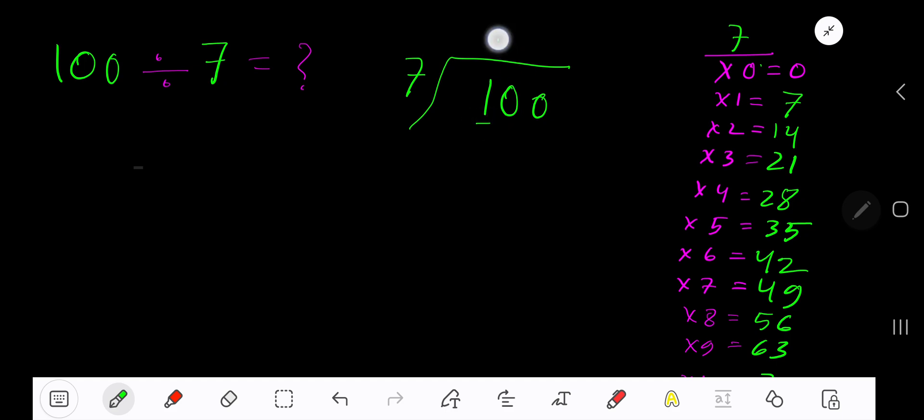7 goes into 1 how many times? 0 times. 0 times 7 is 0, subtract, bring down the next 0. 7 goes into 10 how many times? 1 time. 1 times 7 is 7, subtract to get 3. Bring down the next digit to get 30. 7 goes into 30 how many times? 4 times. 4 times 7 is 28, subtract to get 2. So our answer is 14 remainder 2.